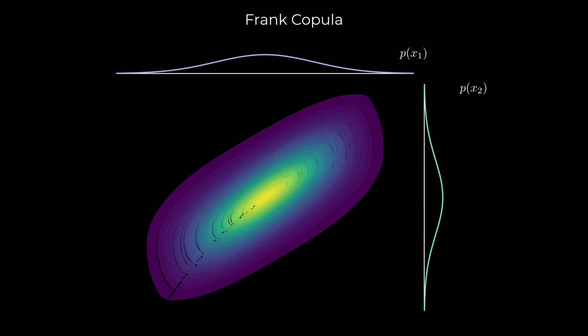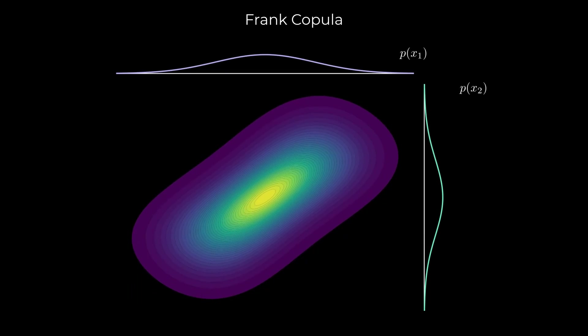The third shows the Frank copula, which flips that pattern. Stronger dependence in the middle, weaker in the tails.